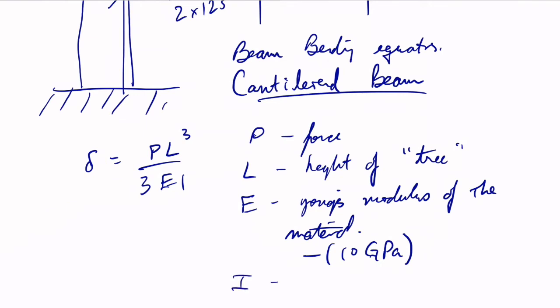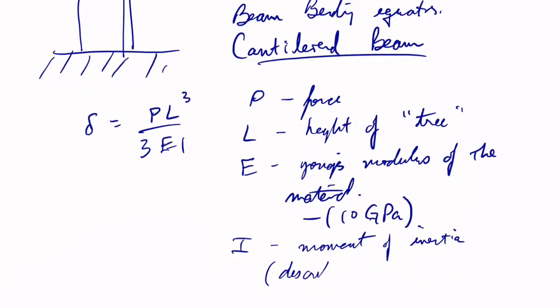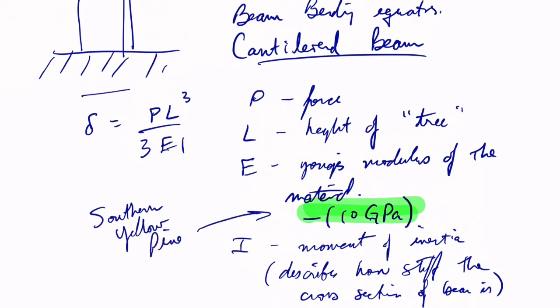It describes how stiff the cross section of the beam is. I'm going to assume that the stiffness is 10 GPa, southern yellow pine. If you plug in all the constants here, might as well keep going on this.